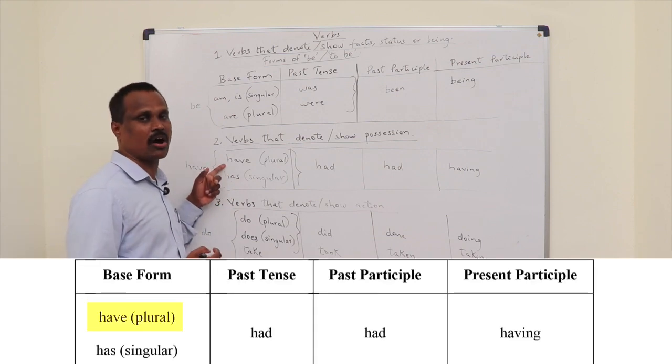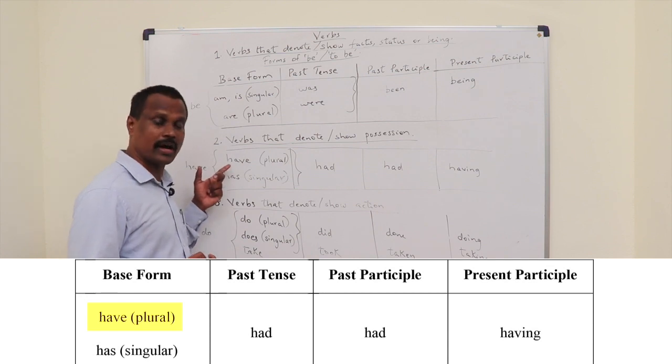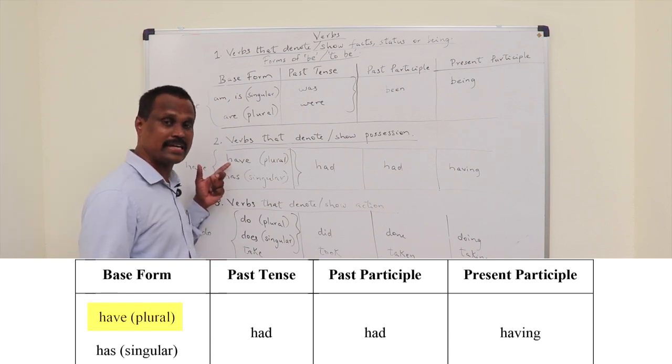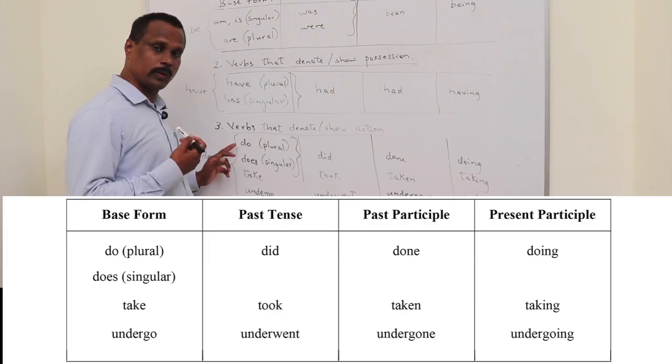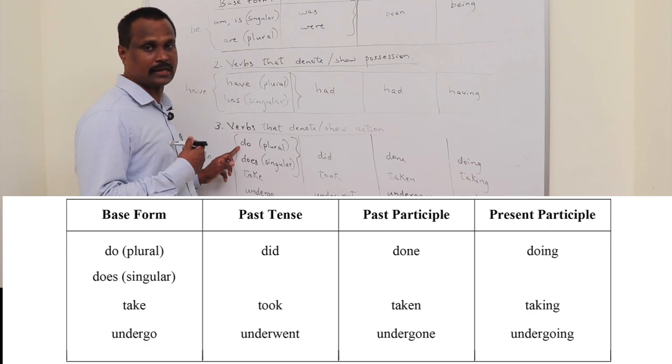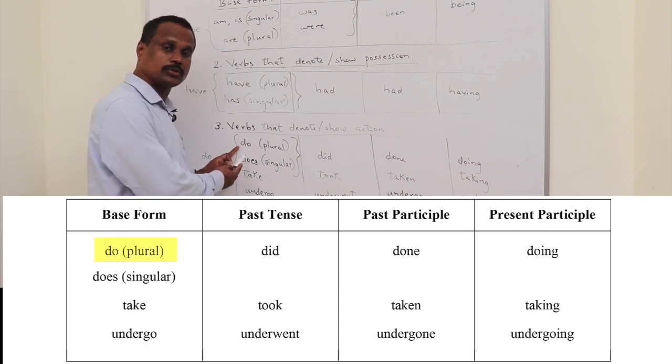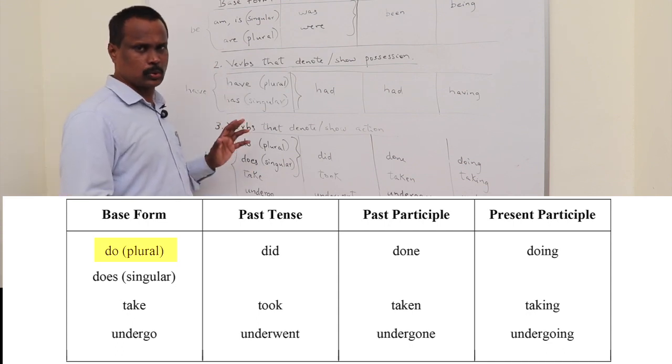the subject I takes a plural verb. For example, I have a car. Or you can say I have fever. I have severe headache, pain or fever. Likewise, for the third category, again, we use a plural verb for the singular subject I. Like for example, I do the job of a teacher. Or I do my work well. So, this is an exceptional rule.